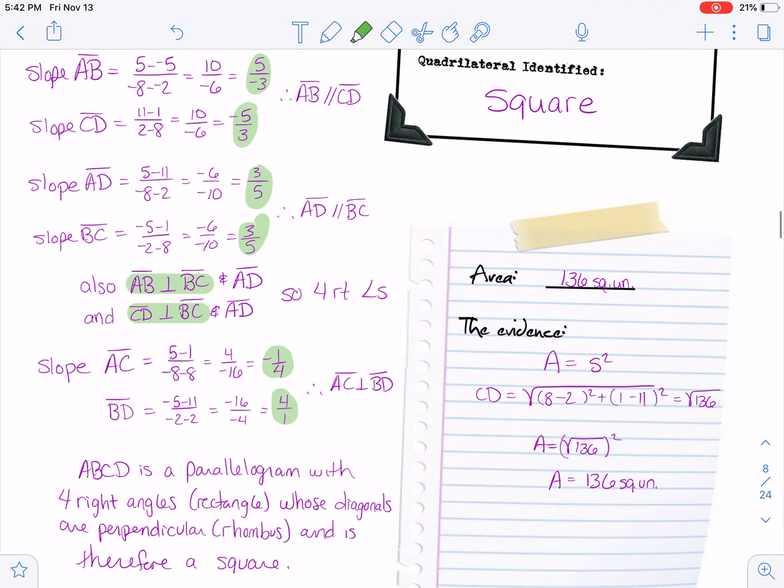So if it is a parallelogram, check, with four right angles, check, whose diagonals are perpendicular, check, then it's a square.